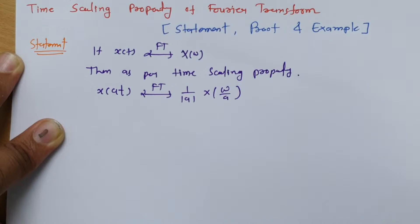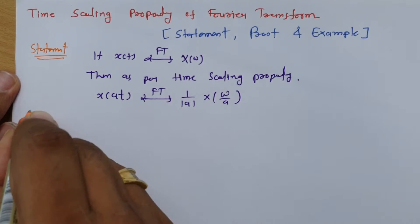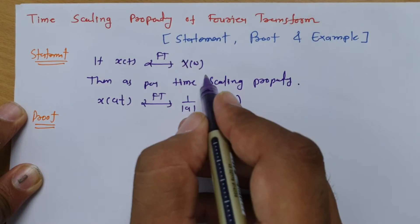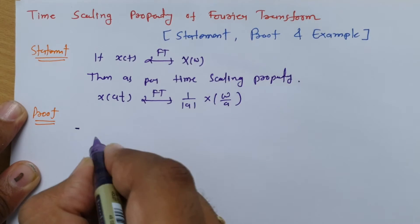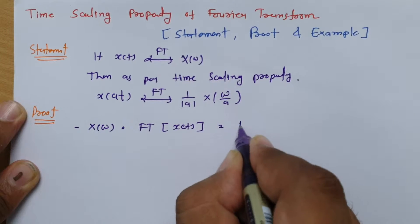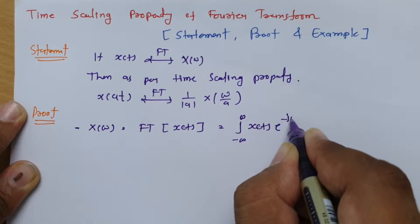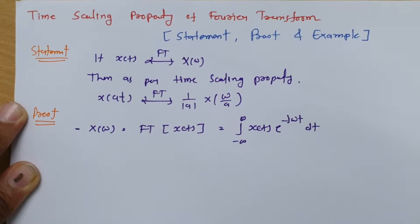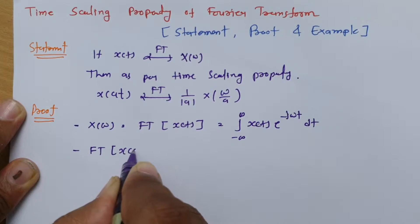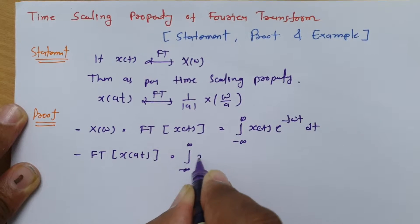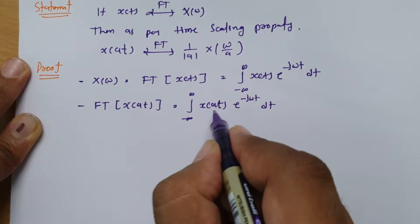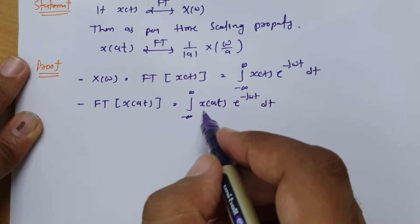Let us prove this property first and then see some examples. To prove it, I start with the Fourier transform of x(t), which is X(ω) = integral from minus infinity to infinity of x(t) · e^(−jωt) dt. Now I will calculate the Fourier transform of x(at), which is the integral from minus infinity to infinity of x(at) · e^(−jωt) dt. To simplify, I will consider a substitution where at equals some variable.